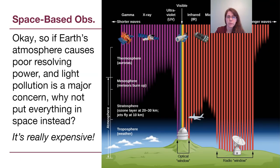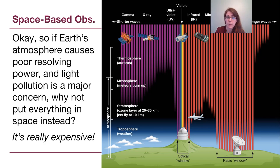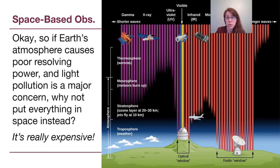Earth's atmosphere protects us from gamma rays and x-rays, but it causes poor resolving power and light pollution for ground-based telescopes. The most obvious reason we don't put all scientific observatories into space is that it is really, really expensive. Also, if anything breaks on a ground-based telescope we can fix it easily, whereas fixing a spacecraft is very difficult. The Hubble Space Telescope had several missions to work on it, but those required the space shuttle program, which we no longer have.